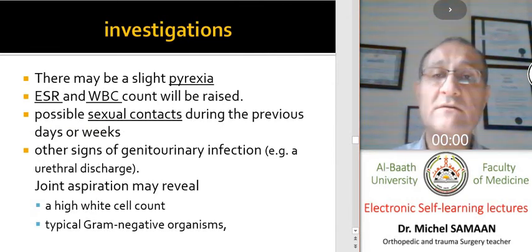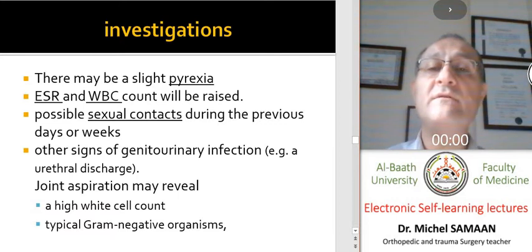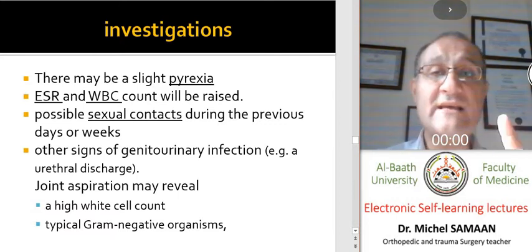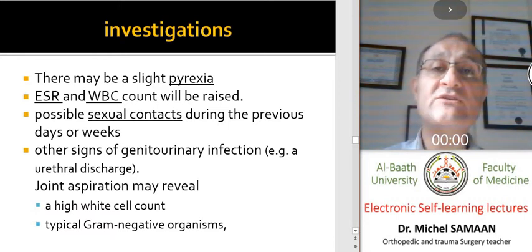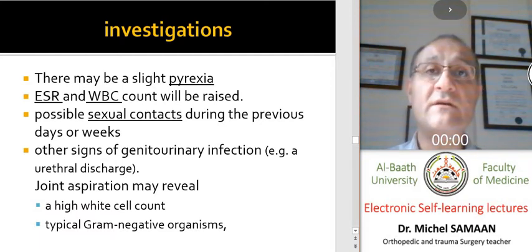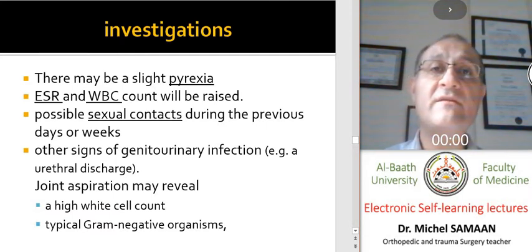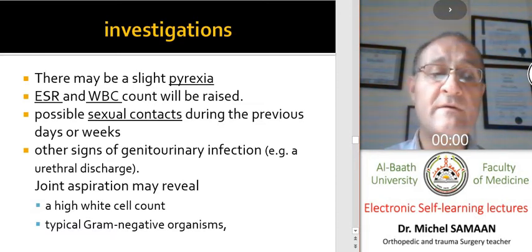Usually there is slight fever and raised blood investigation markers, as in all septic arthritis. We have pain and an inflamed joint. We should always ask about recent sexual relationships, other genitourinary infections, or morning purulent discharge from the penis in males. We should always perform joint puncture to identify germs and high white blood cell concentration.